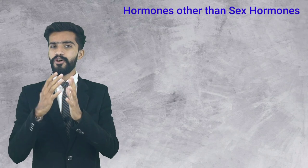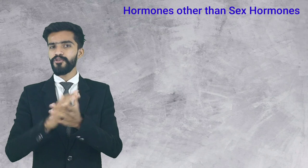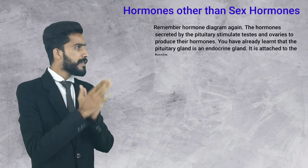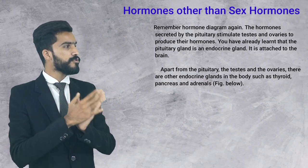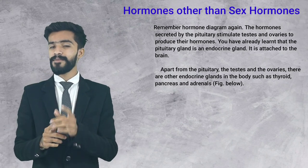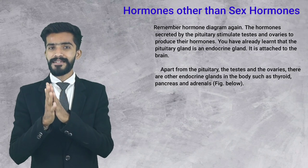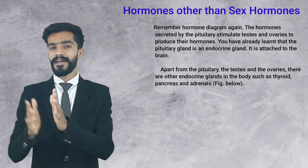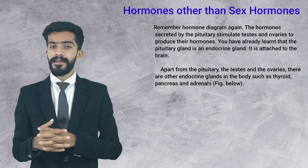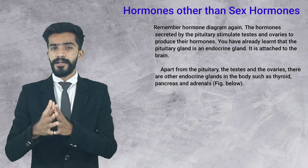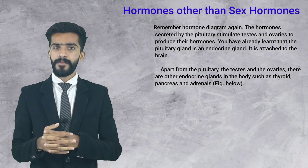The pituitary gland stimulates the testes and ovaries to produce their hormones. The hormones secreted by the pituitary gland — what does it do? It stimulates the testes and ovaries to produce eggs and to produce hormones.